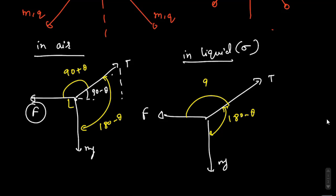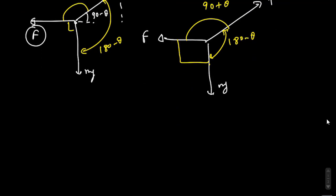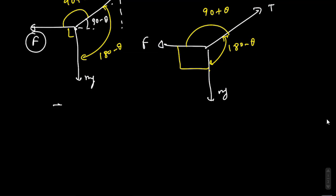The equation is like that. Using Lami's theorem: T by sine θ equals to Mg by sine of 90 plus θ equals to F by sine of 180 minus θ.